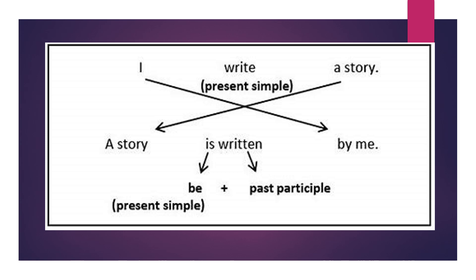The first step: we begin with the object, which is 'a story.' The second step: I have to look at the verb — 'write.' What tense is it? It's present simple. Do we have a helping verb here? We said before that the helping verbs are: am, is, are, was, were, have, had, has, and so on.